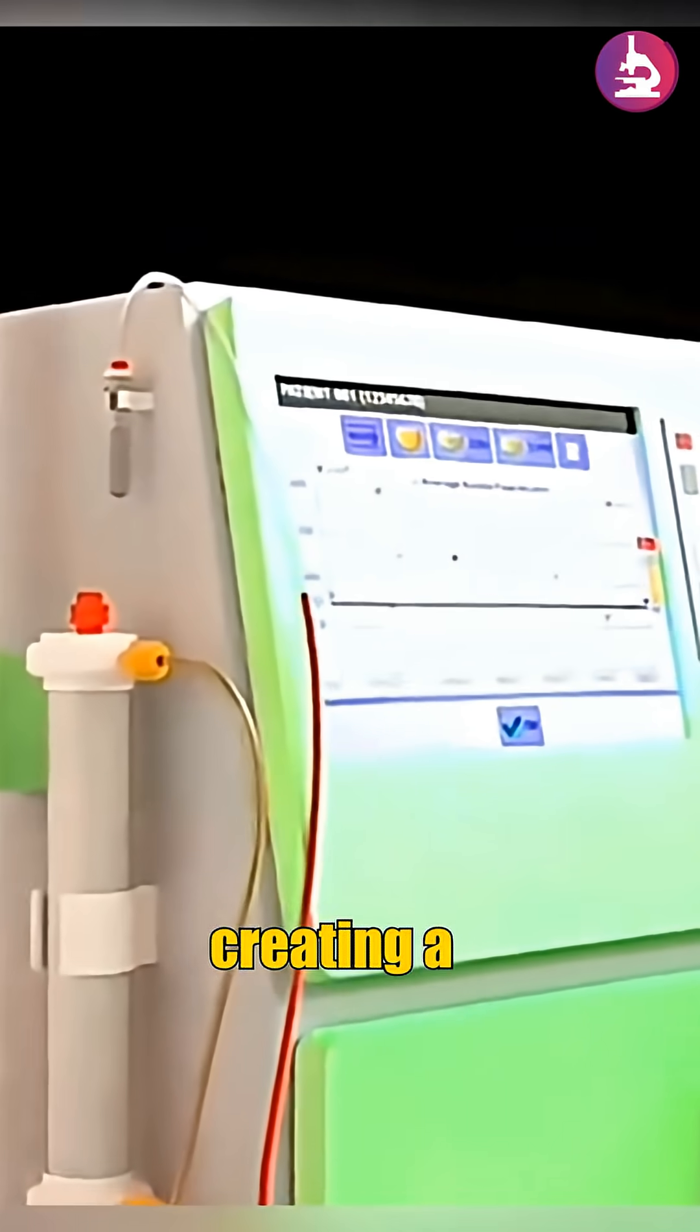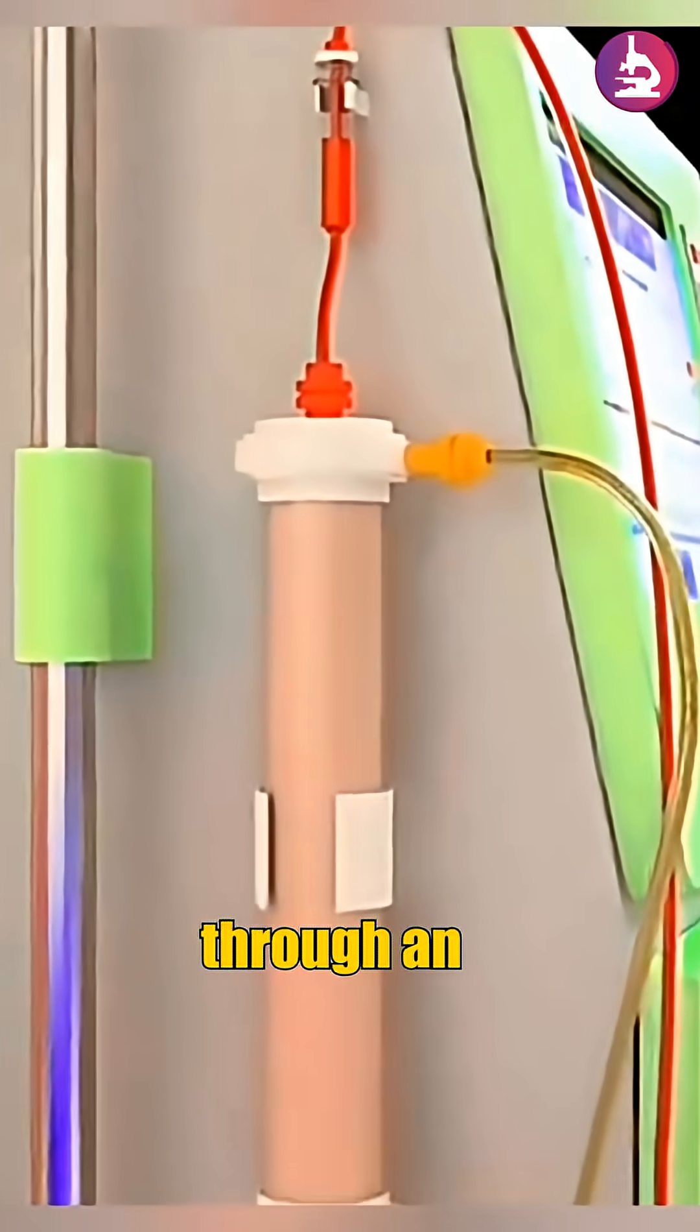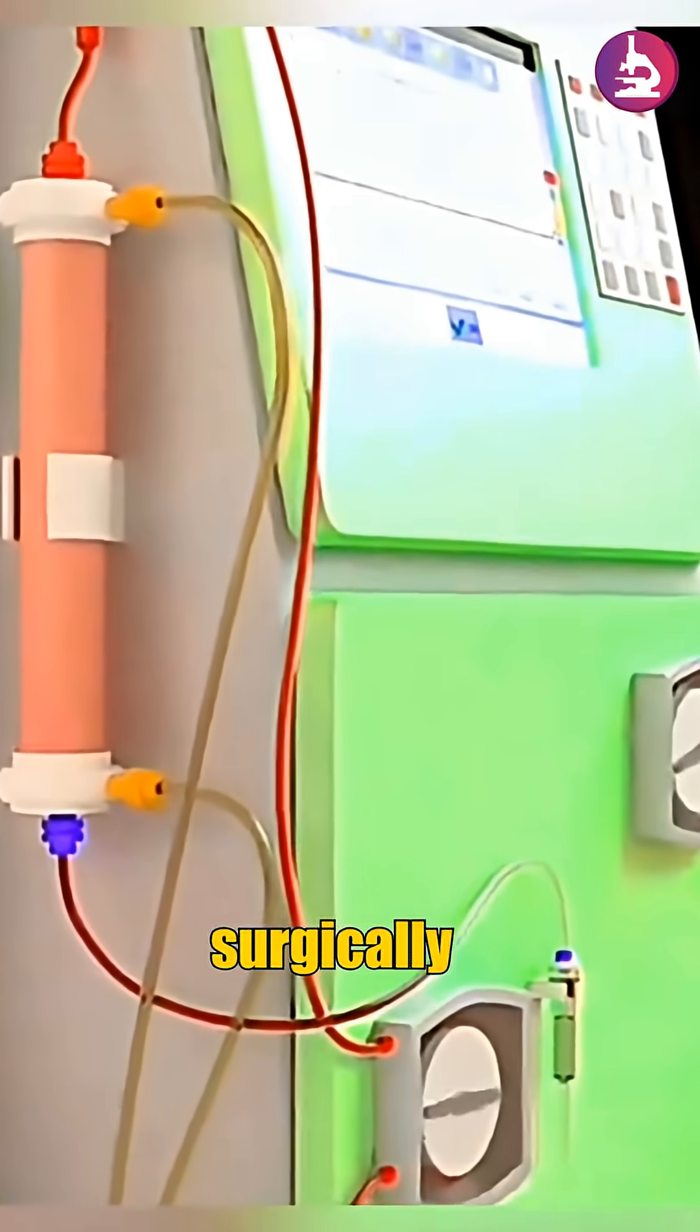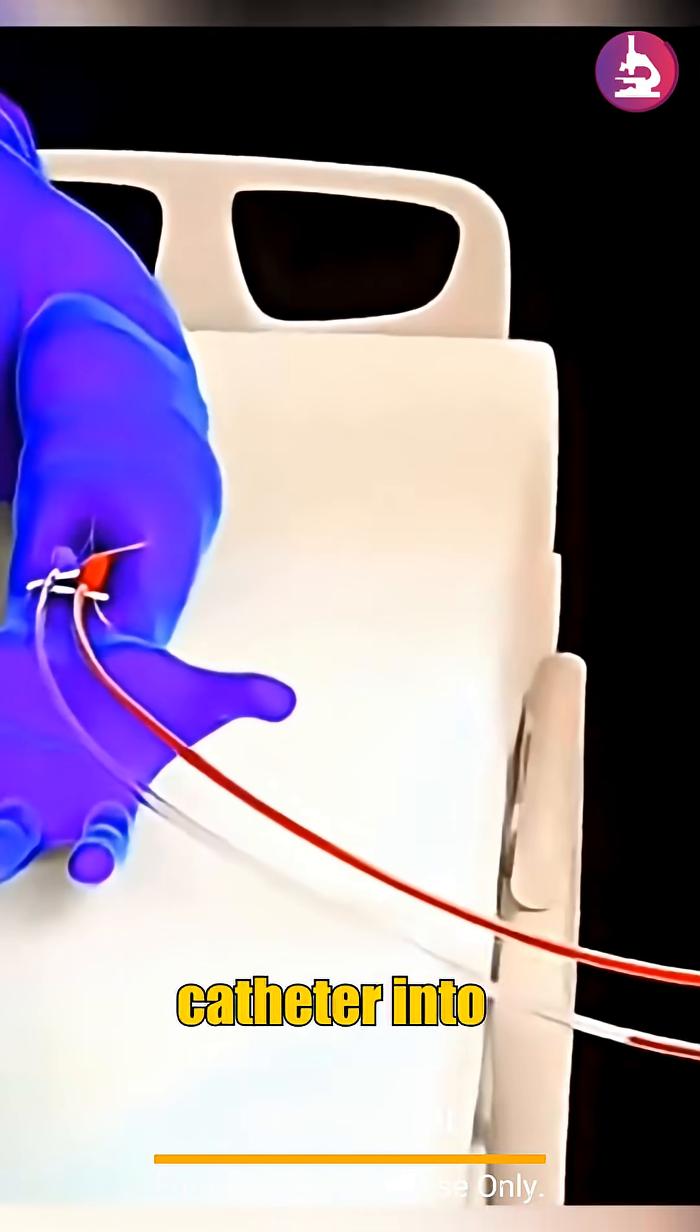The procedure starts by creating a pathway to the patient's circulation. This is most commonly achieved through an arteriovenous fistula, which is a surgically formed link between an artery and a vein, or by placing a catheter into a major vein.